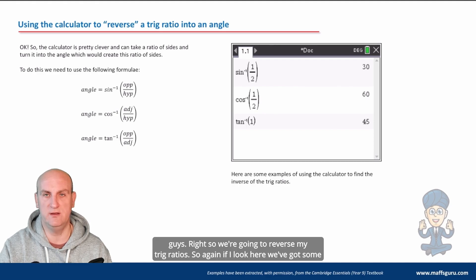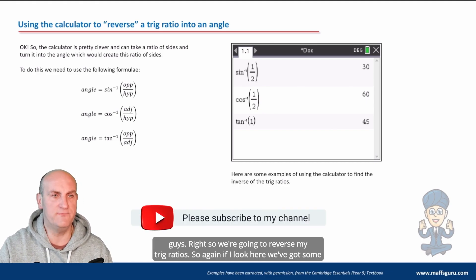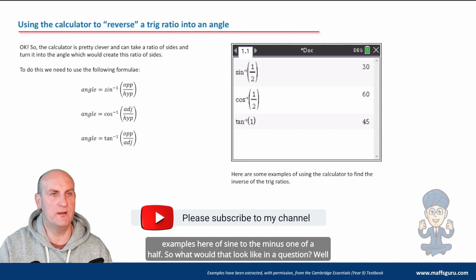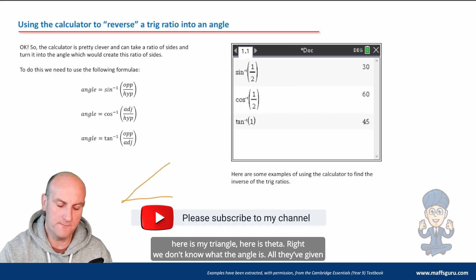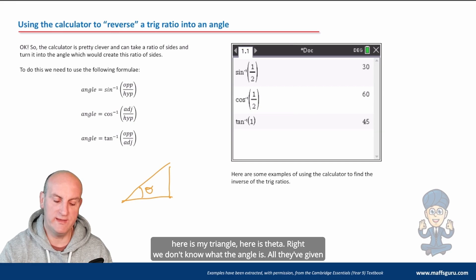Right. So we're going to reverse my trig ratios. So again, if I look here, we've got some examples here of sine to the minus one of a half. So what would that look like in a question? Well, here is my triangle. Here is theta. Right. We don't know what the angle is.